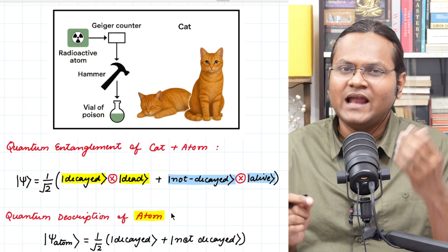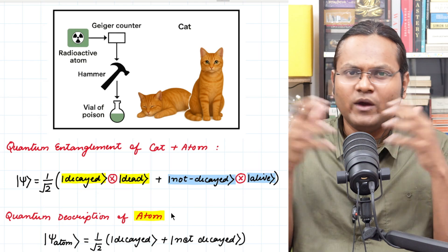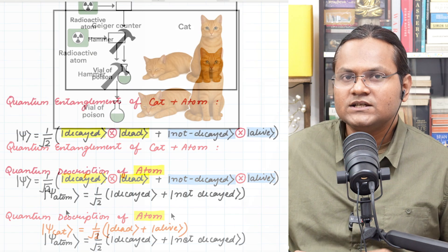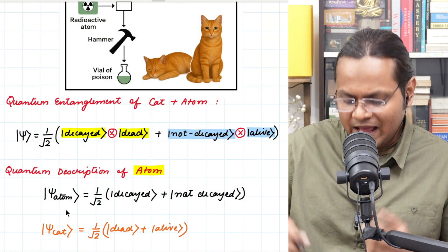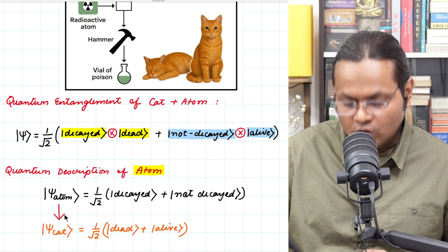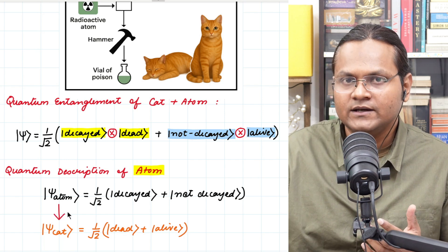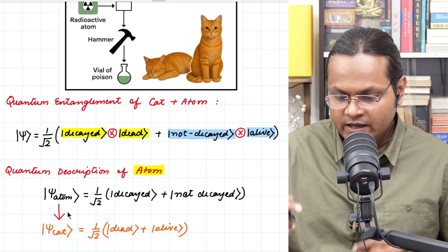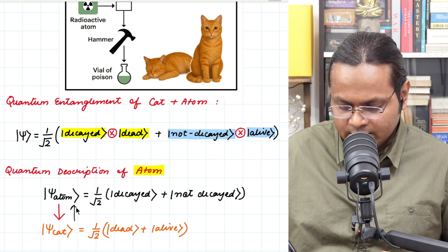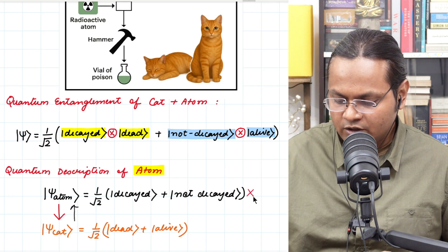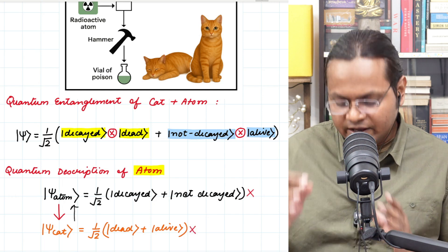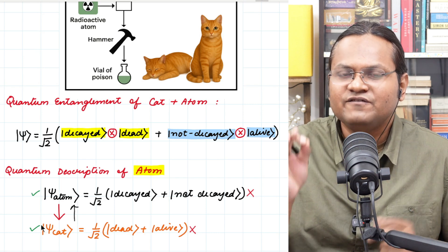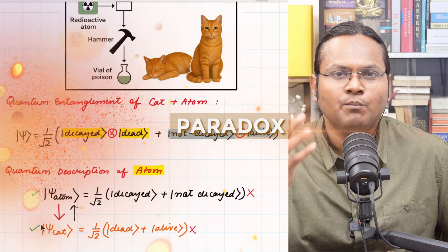Now, since I already told you that the life of the cat and the life of the atom is now entangled together, so a description of the atom directly influences the description of the cat. So if we have this kind of a quantum mechanical description of the atom, we must also have a same kind of a quantum mechanical description of the cat, that the cat must be alive and dead at the same time. And if that is not possible, if we cannot have a quantum description of the cat, then we should not be able to have a quantum description of the atom either. Either both descriptions are correct or both descriptions are incorrect. This is the fundamental paradox that was raised by Schrödinger.